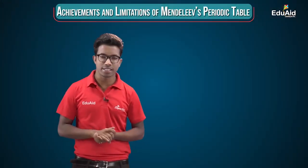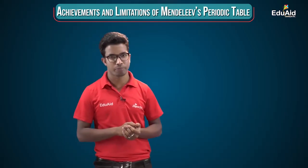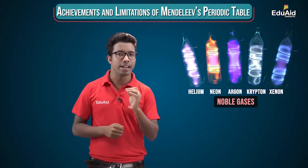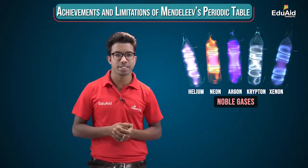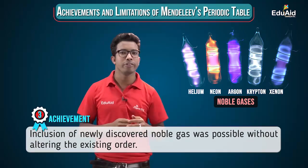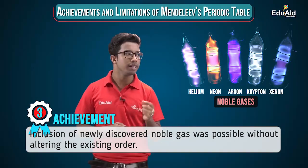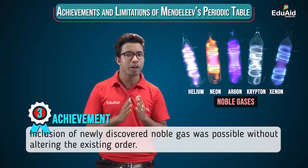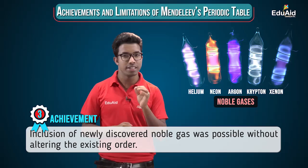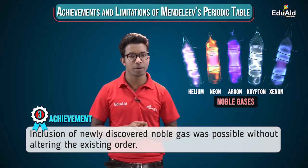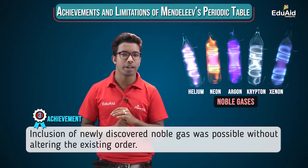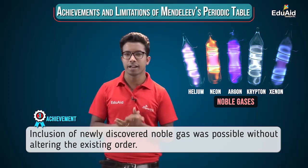Another achievement of Mendeleev's periodic table is related to noble gases like helium, neon, and argon. These gases are very less reactive and have very limited presence in the atmosphere, so they were discovered quite late. When they were discovered, they could be placed in Mendeleev's periodic table without altering the existing order — another significant achievement.